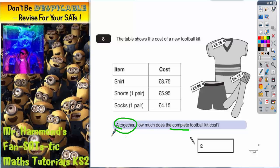Anytime you see the word altogether, it's basically another word for total. And if you're finding the total, it means you've got to add up the separate prices.